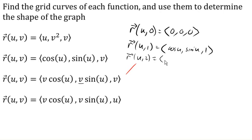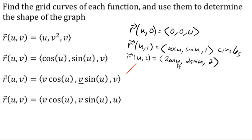Letting v equal 2, we get (2 cos u, 2 sin u, 2). At a z value of 2, we're getting a circle again in x and y, but this time with a radius of 2. So it's important to note not only the shape of the grid curve, but how it's changing with v. At z equals 1 we have a circle of radius 1; at z equals 2, a circle of radius 2.